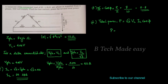Total power P is equal to root 3 into VL into IL into cosφ, that is root 3 into 400 into 69.28 into 0.8, which equals 38,398 watts.